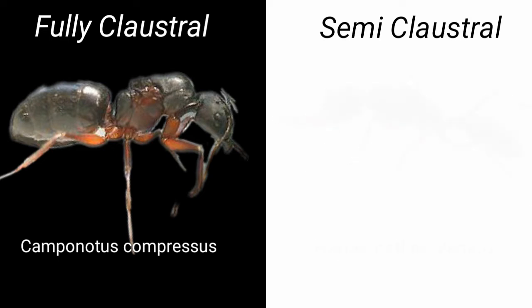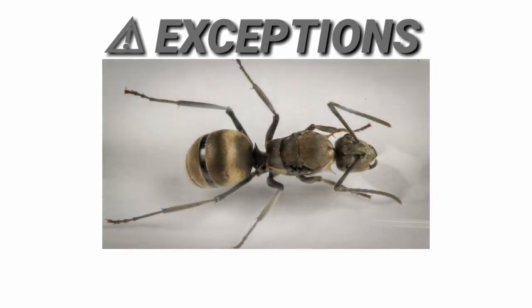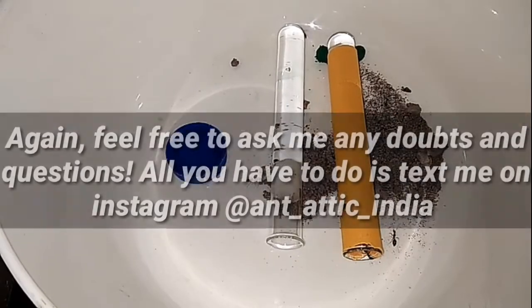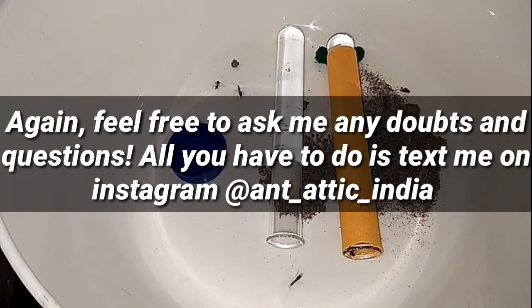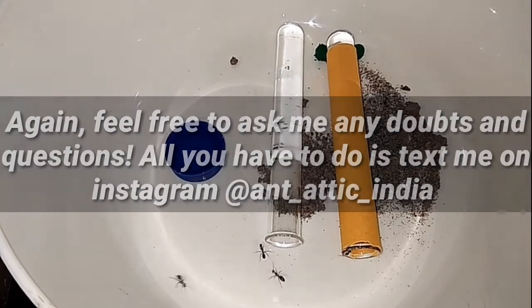For a semi claustral queen, their gasters are not so large compared to their thorax — they are almost the same thickness in many cases. But sometimes there are a few exceptions. For example, this right here is a polyrachis queen. She has a big size with a big thorax and gaster, and she might look like a fully claustral queen, but she is actually a semi claustral queen. So it's always best to ask about the type and species of the queen you have from your fellow ant keepers.